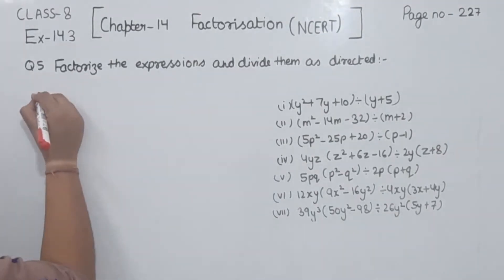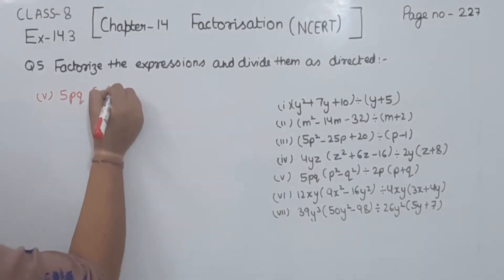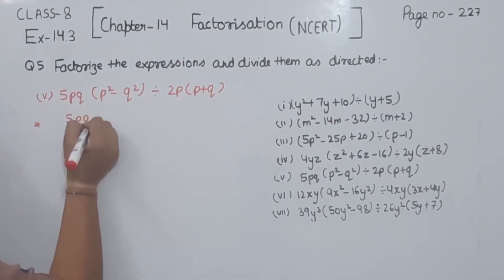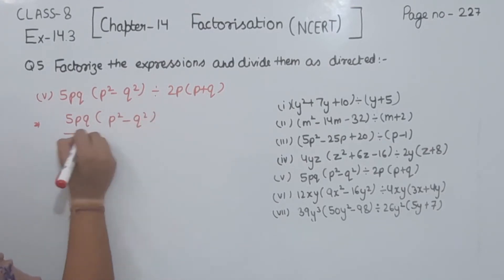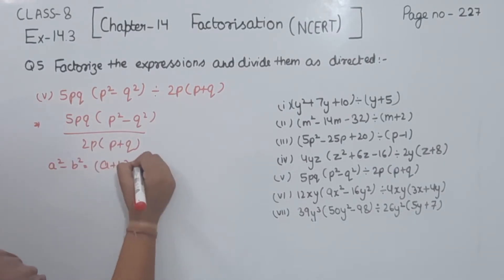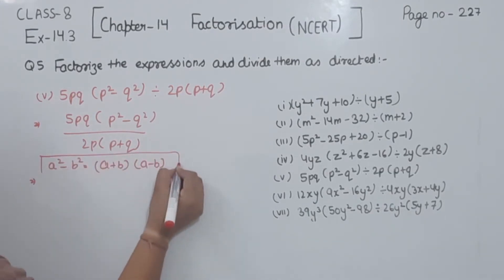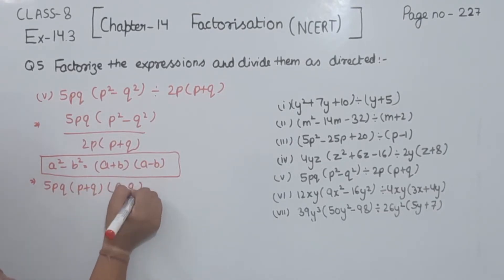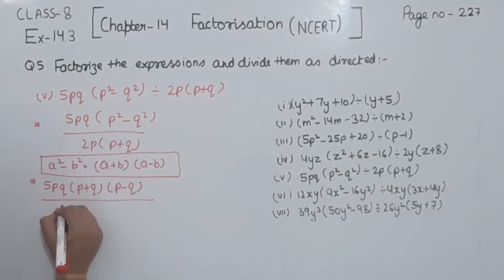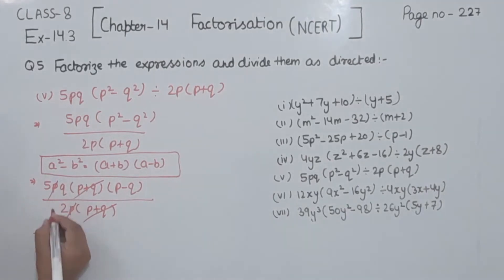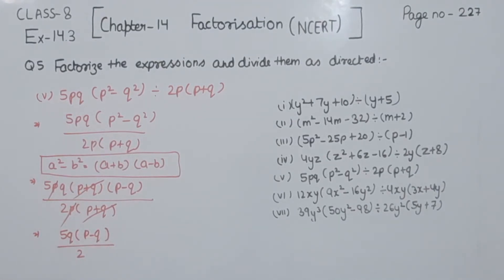Now comes part 5. This one we are having is 5p cubed times (p squared minus q squared) divided by 2p times (p plus q). I am going to use the identity a squared minus b squared equals (a plus b)(a minus b). So we have 5p cubed times (p plus q) times (p minus q) divided by 2p times (p plus q). p plus q cancels from p plus q and p cancels from p. The solution for part 5 is 5p squared times (p minus q) divided by 2.